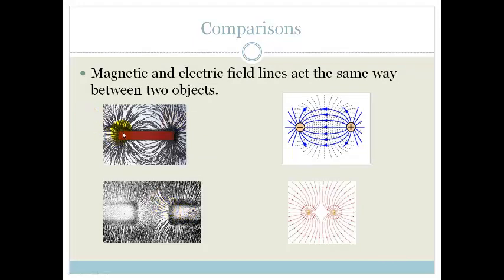So, magnetic and electric field lines act the same way between two objects. That, if you've got, in this case, we've got north and south poles, and do you see it's got that beautiful shape? And here, we've got a positive and negative, and we've got that beautiful shape.